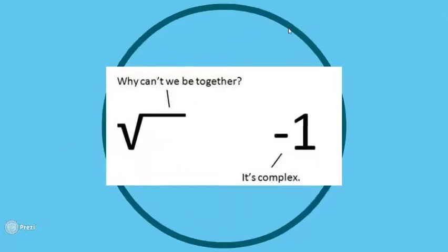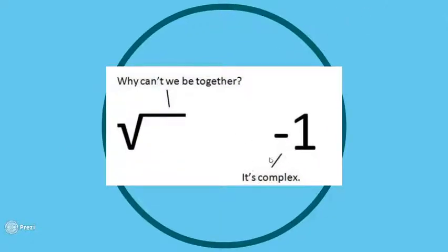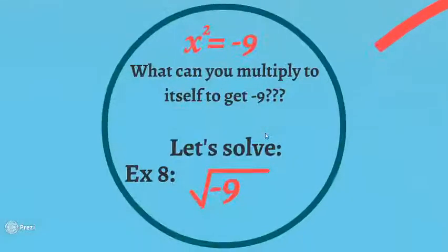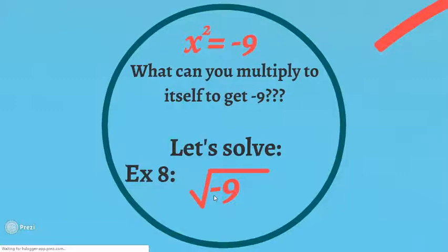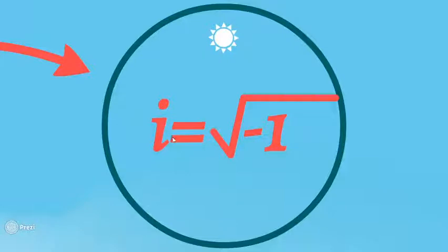Another board slapper: the square root says 'why can't we be together?' and negative one says 'it's complex' — because imaginary numbers are complex numbers. Now, we're going to talk about how to solve square roots with negatives. If you ever have a negative underneath the square root, that means you're going to have an imaginary number. We'll simplify square roots with negatives, and i is defined as the square root of negative 1. Whenever you have a negative under a radical, an i will appear.